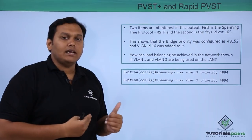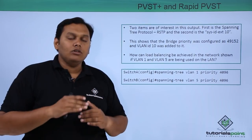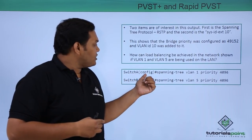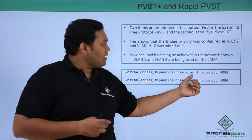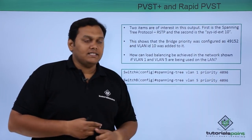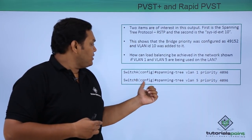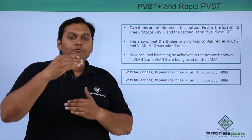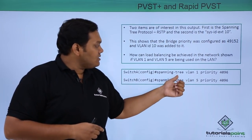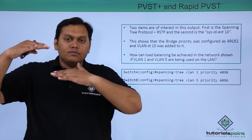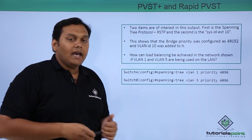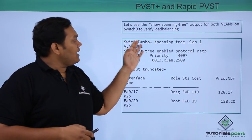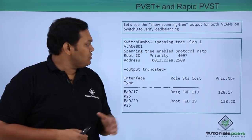To configure load balancing across two VLANs, use the following syntax: on Switch A in configuration mode, spanning tree VLAN 1 priority 4096; on Switch B in configuration mode, spanning tree VLAN 5 priority 4096. By assigning these priorities, the load is balanced between Switch A and Switch B. To verify, use the show spanning tree command.